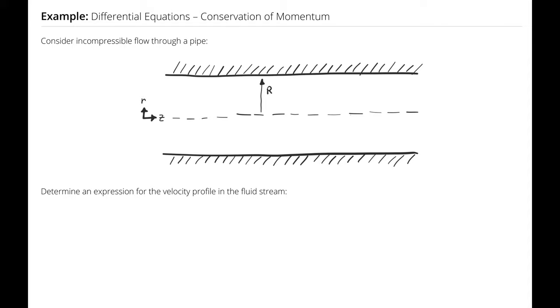That pipe has a radius of r, that's uppercase R, not to be confused with the lowercase r, which is one of my axes, and I want to know how the velocity profile is developed if we have a pressure gradient again.